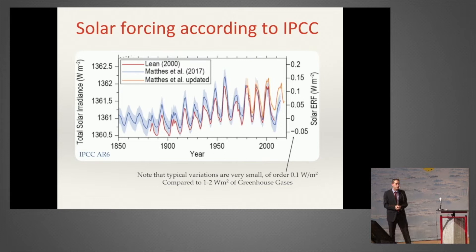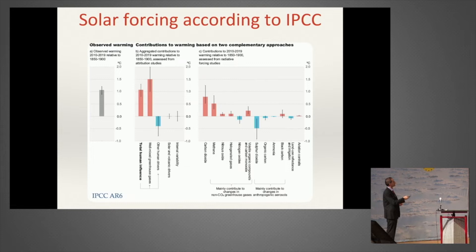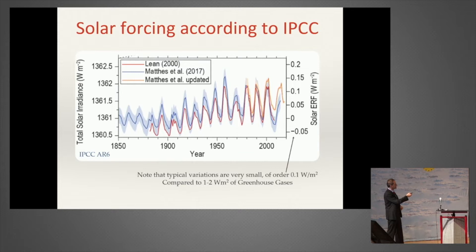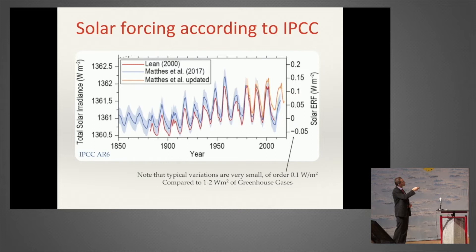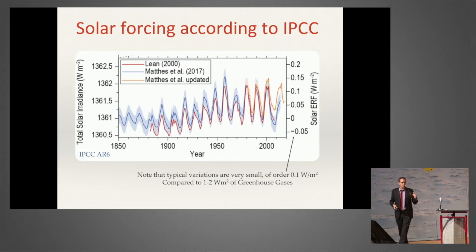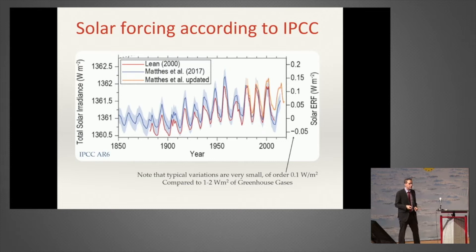If you open the IPCC reports, such as the last one, you will see a graph showing the changes in total solar irradiance, which you can translate into changes in the energy budget here on Earth—how many watts per square meter does solar activity translate into? The changes in solar activity translate into changes of about 0.1 watts per square meter on the surface of the Earth, compared to the 240 watts per square meter we get from the sun. So the changes in solar irradiance are minuscule.